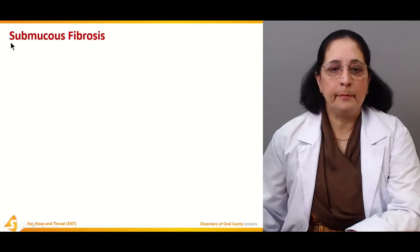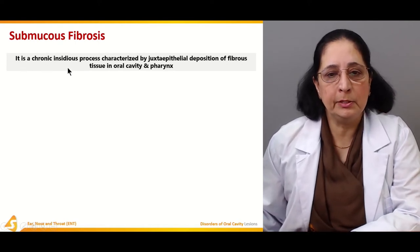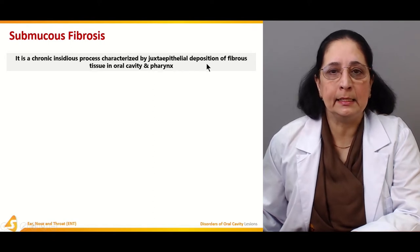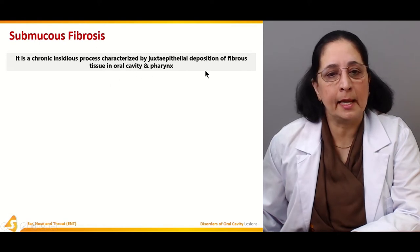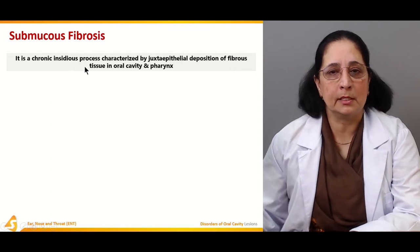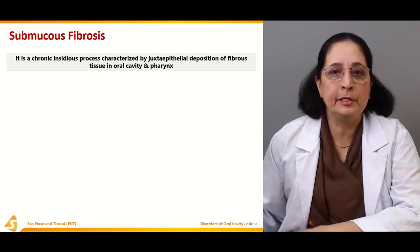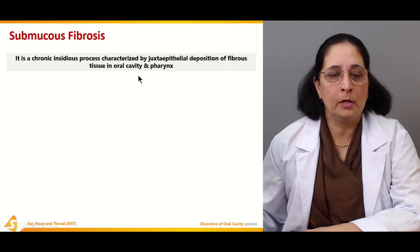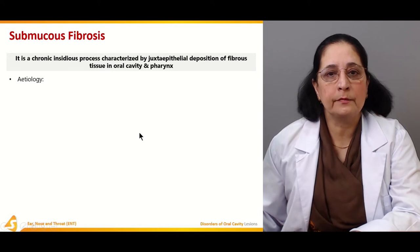Submucous fibrosis is a chronic, insidious process characterized by juxta-epithelial deposition of fibrous tissue in the oral cavity and pharynx. It is not sudden — it is a slow, progressing process with deposition of fibrous tissue in the oral cavity and pharynx.